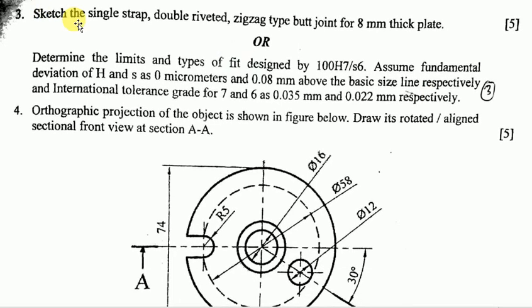Question number 3: Sketch the single strap, double riveted, zigzag type butt joint for 8mm thick plate. This carries 5 marks.